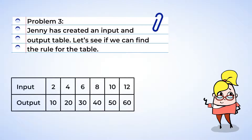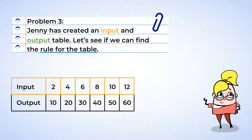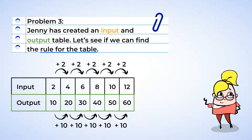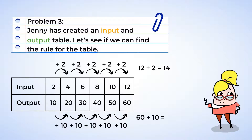Jenny has created a table for us to find a pattern in as well — an input and output table. Let's see if we can find the rule for the table. The input increases by 2, and the output increases by 10 each time. So if we were to continue the table, the next input would be 12 plus 2, or 14, and the next output would be 60 plus 10, which is 70.